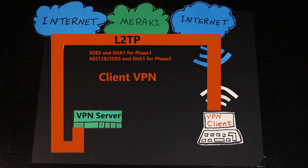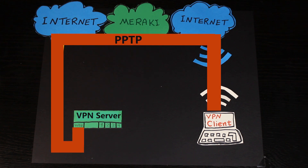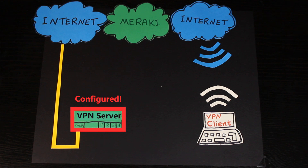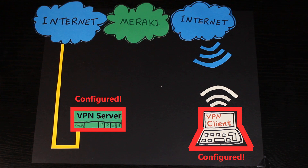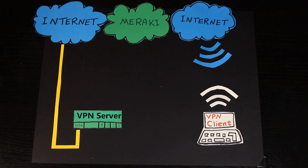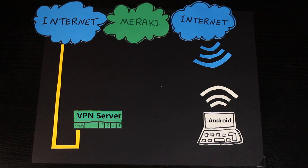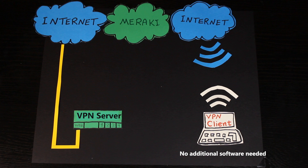Let's get started. Cisco Meraki uses the L2TP tunneling protocol for client VPN. There are different types of VPN — we've already talked about PPTP and OpenVPN — but Meraki only supports L2TP. As part of the client VPN configuration, I'll need to configure the server so the VPN service is enabled and ready for clients to connect. I'll also need to configure the clients so they know the server's IP address and VPN protocol. With L2TP, Windows, Mac OS, iOS, and Android devices can use their built-in VPN software — no additional installation needed, unlike OpenVPN where we had to install software on each client.